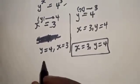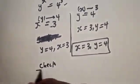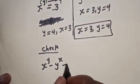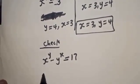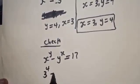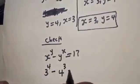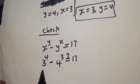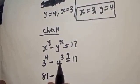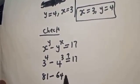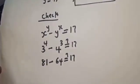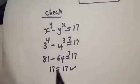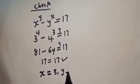Let's verify our answer. The given equation is s raised to power y minus y raised to power s must equal 17. With s equals 3 and y equals 4: 3 raised to power 4 minus 4 raised to power 3 equals 81 minus 64 equals 17, which equals 17. This confirms our answer: s equals 3, y equals 4.